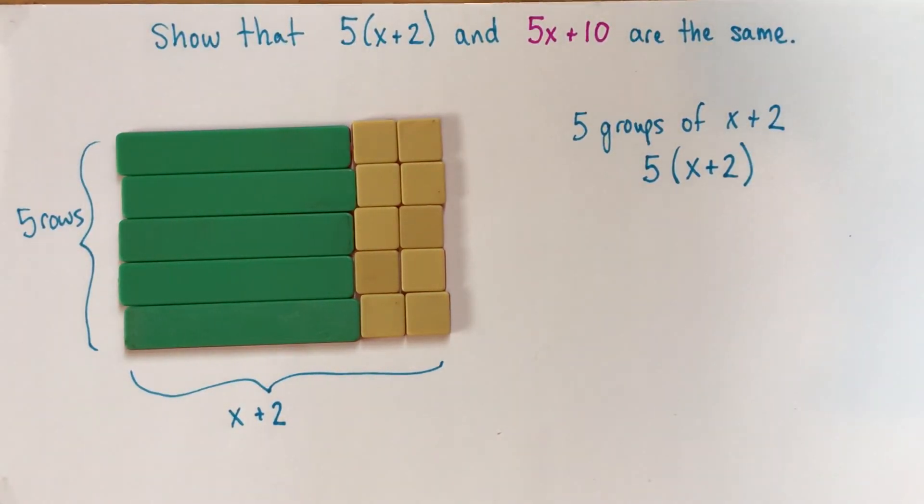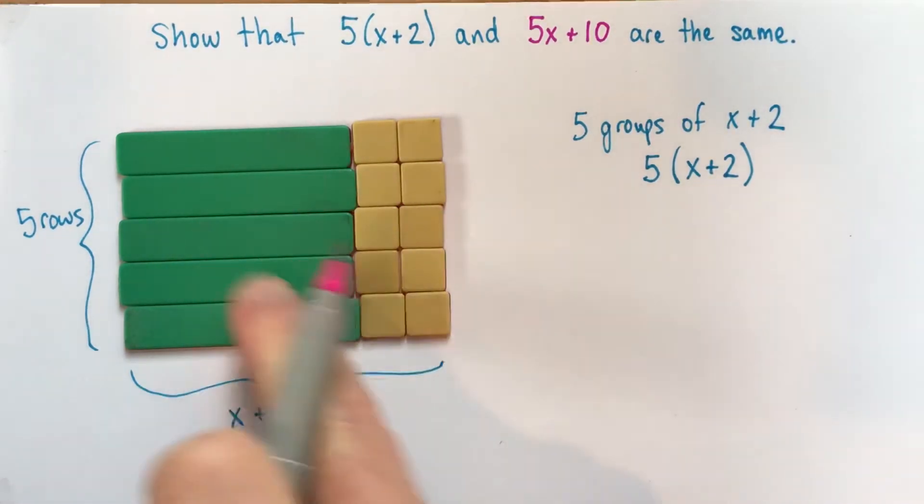Okay, so you say that's fine, but how do we get to the 5x plus 10? Well, pretend that I didn't see any of this blue writing, and I just looked at this diagram here, and you asked me what it was.